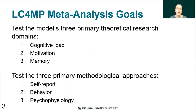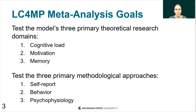We had some basic goals for the meta-analysis. One was to test the model's three primary theoretical research domains: cognitive load, motivation, and memory. The cognitive load research domain is concerned with capacity limitations in the human processing system — like how different message characteristics load the processing system in various ways, and how cognitive load modulates message processing. For example, a cognitive load study might look at how different cuts of a message or presenting a message in different timelines affects the attentional allocation participants have when watching that message.